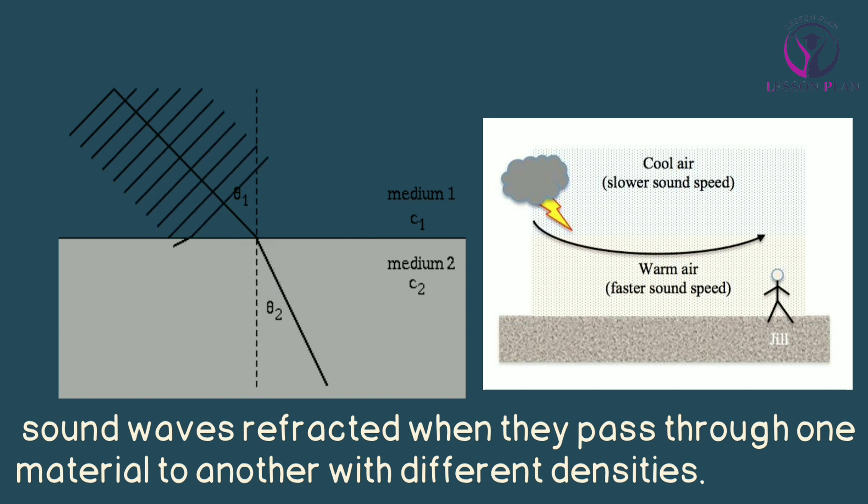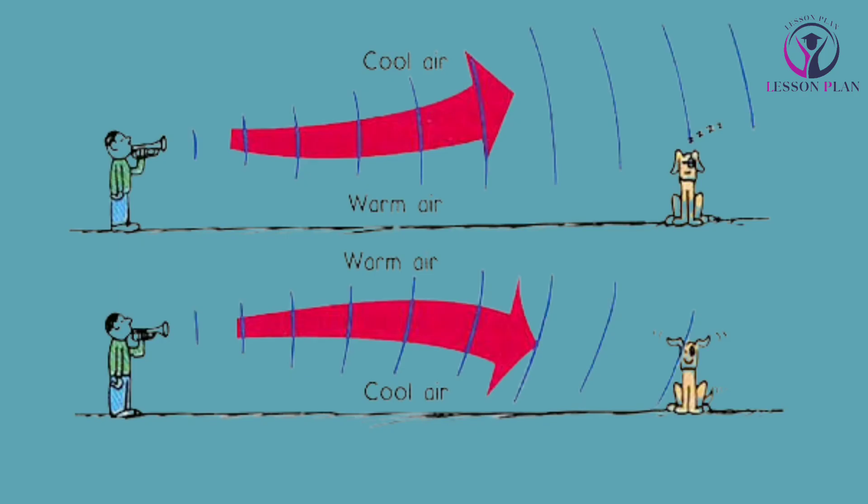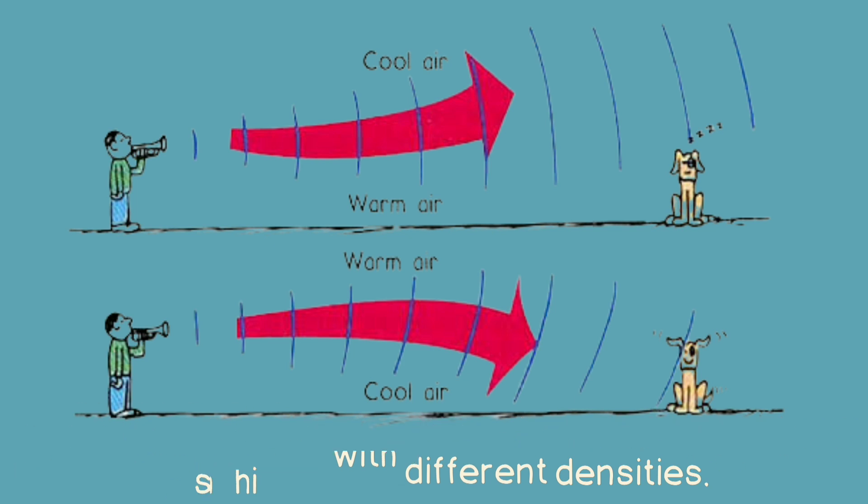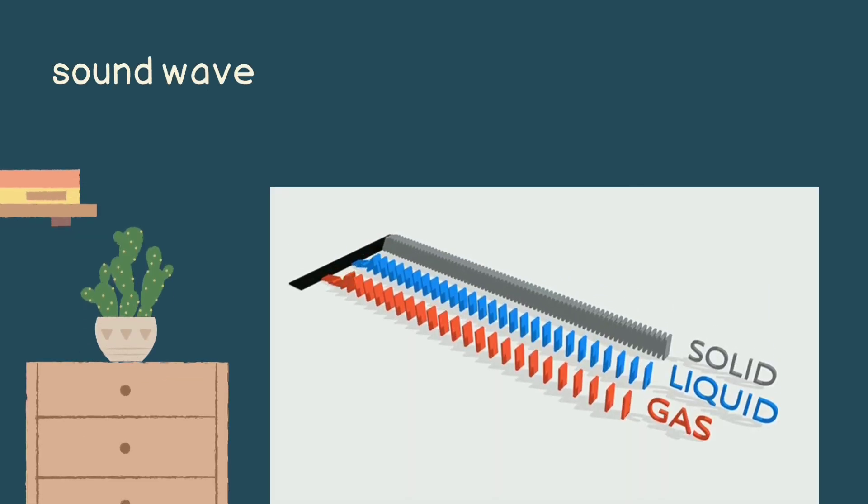This effect is often seen when sound travels through the atmosphere, where the temperature and humidity can cause sound waves to bend and refract. So in summary, sound waves interact with different materials in different ways: they can create vibrations, be absorbed or reflected, and even be refracted as they travel through different mediums.